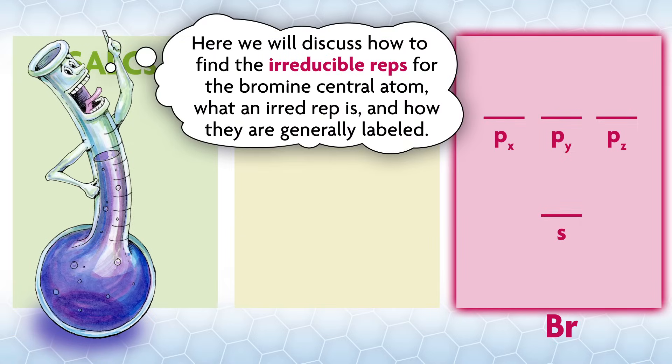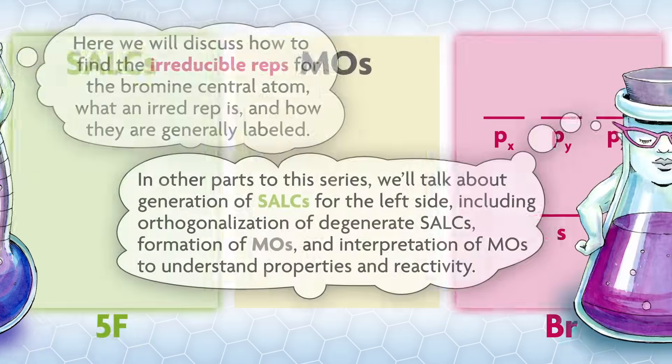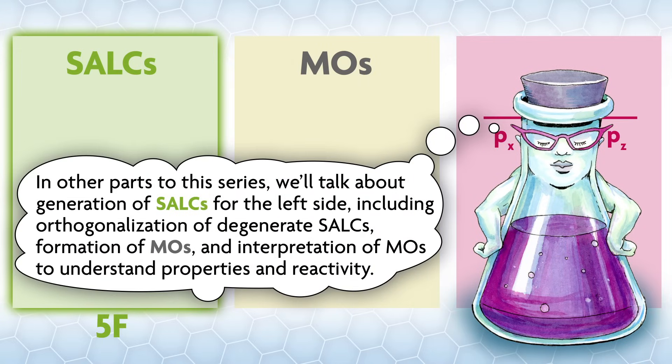Here we'll discuss how to find the irreducible reps for the bromine central atom, what an irreducible rep is, and how they are generally labeled. In other parts to this series, we'll talk about generation of SALCs for the left side, including orthogonalization of degenerate SALCs, formation of MOs, and interpretation of MOs to understand properties and reactivity.